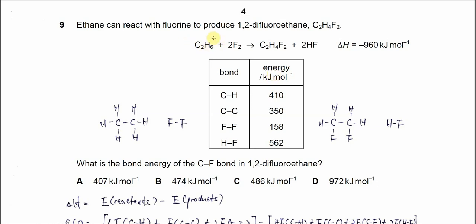Question 9. There is a reaction between ethane and fluorine to form 1,2-difluoroethane and hydrogen fluoride. The enthalpy of this reaction is negative 960 kilojoules per mole.